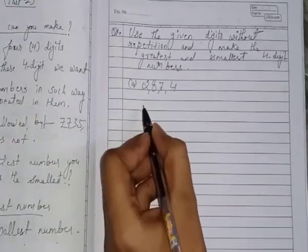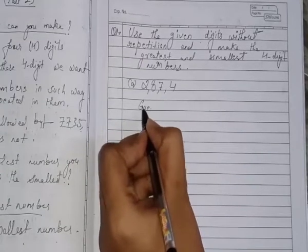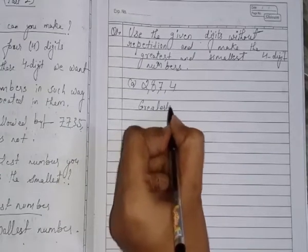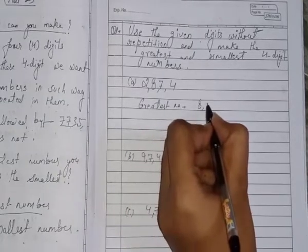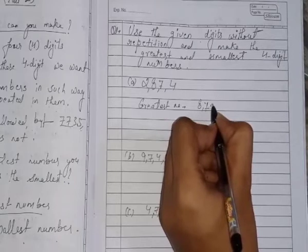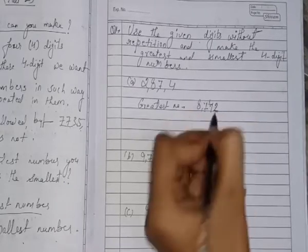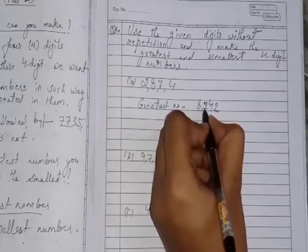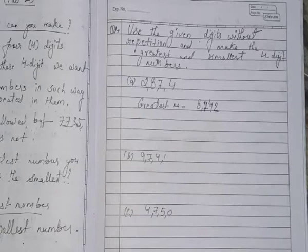These are 4 digits, so we can make the smallest or greatest. Which one will you prefer to make first? If I am making the greatest number, we can make 8742 because this number is in decreasing form. That's why this is the greatest.